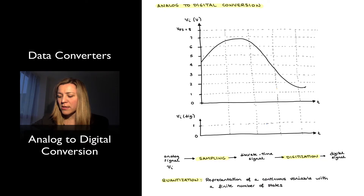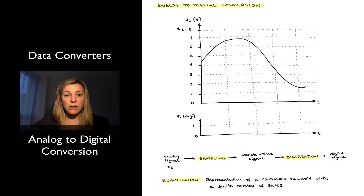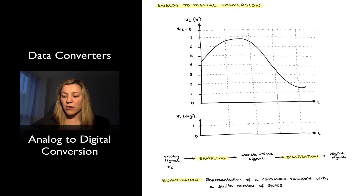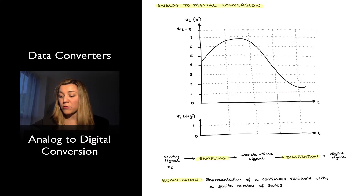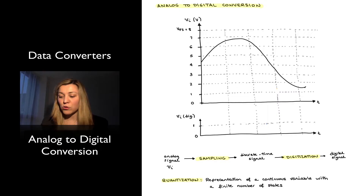The signal varies in amplitude over time. I have represented on the y-axis different points from 0 to 8, and I've labeled 8 as VFS — the full-scale voltage. I'm assuming that this analog signal can vary between 0 volts and 8 volts, so 8 volts will be my full-scale voltage range.